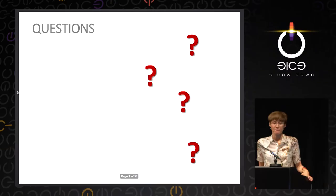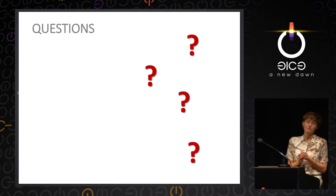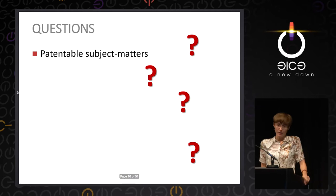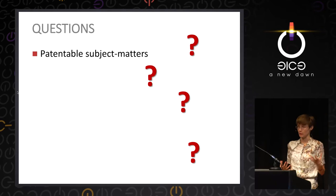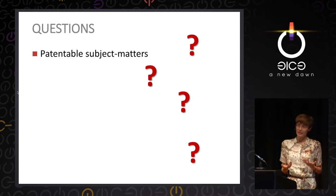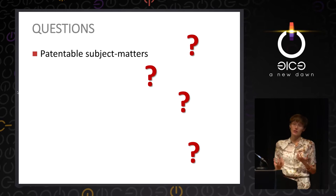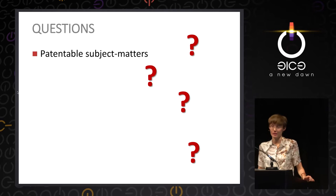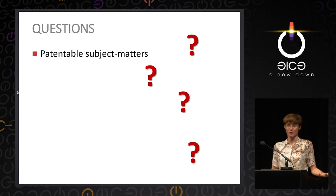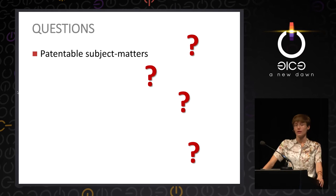There are various questions about the current state of the patent system. First, patentable subject matters: the scope of patentable subject matter is growing. Initially, patents were granted for tangible goods — devices, elements, components. But nowadays more patents are granted for intangibles. There is a great issue with software patents, where quality is often a challenge. There are also biotechnological patents, and it's still controversial whether we can protect something that exists in nature. Currently, only in vitro processes are protected — nothing done on the human body in vivo can be protected.